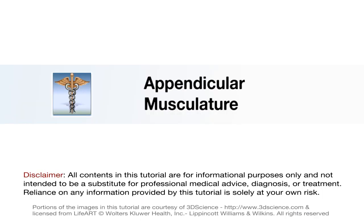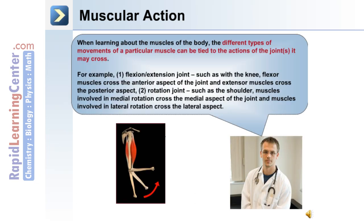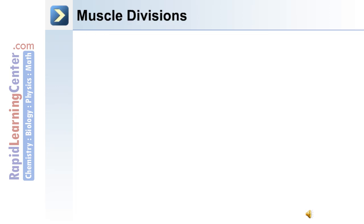Let's begin with the appendicular musculature of the body. When studying and learning about the muscles of the body, the different types of movements of a particular muscle can be tied to the action of the joints it may cross. For example, a flexion-extension joint such as the knee — flexor muscles cross the anterior aspect of the joint, and extensor muscles cross the posterior aspect. A rotation joint such as the shoulder — muscles involved in medial rotation cross the medial aspect of the joint, and muscles involved in lateral rotation cross the lateral aspect.